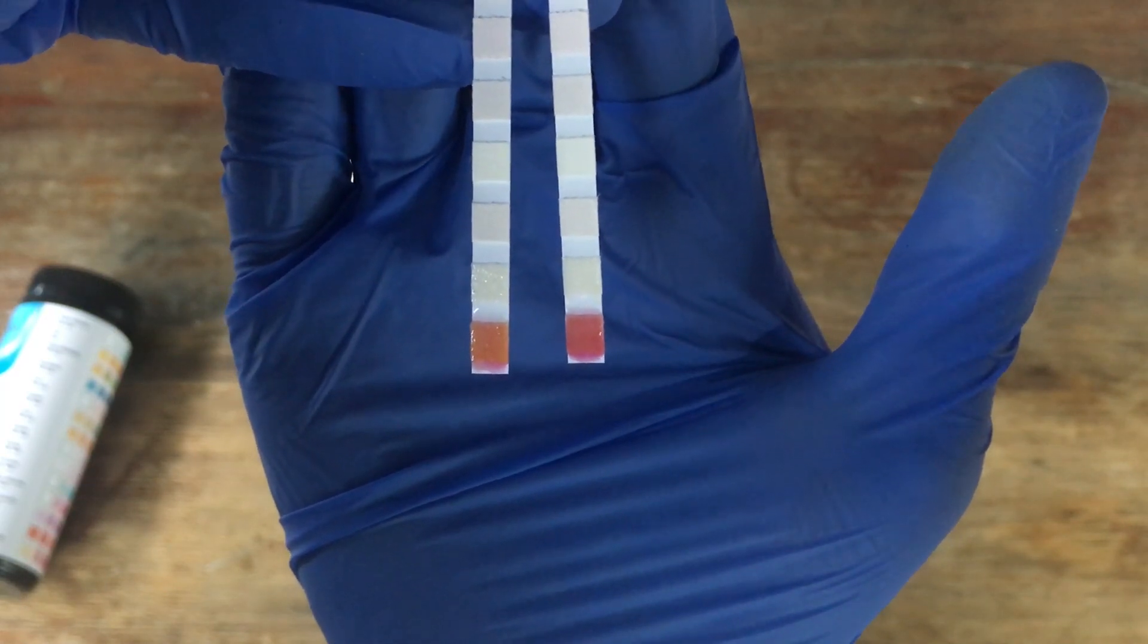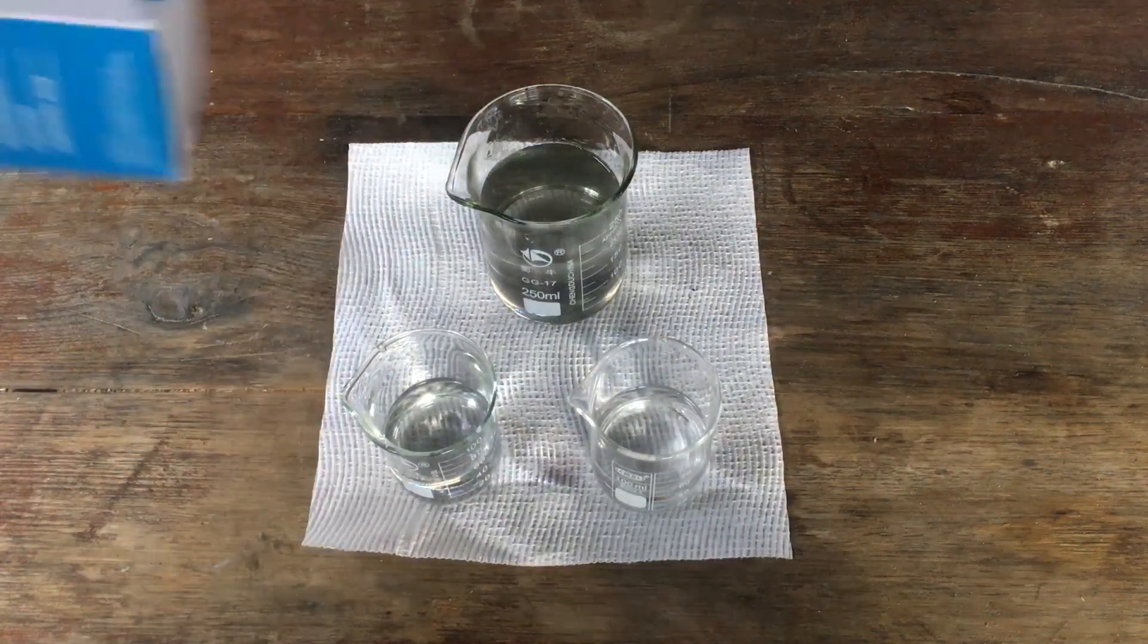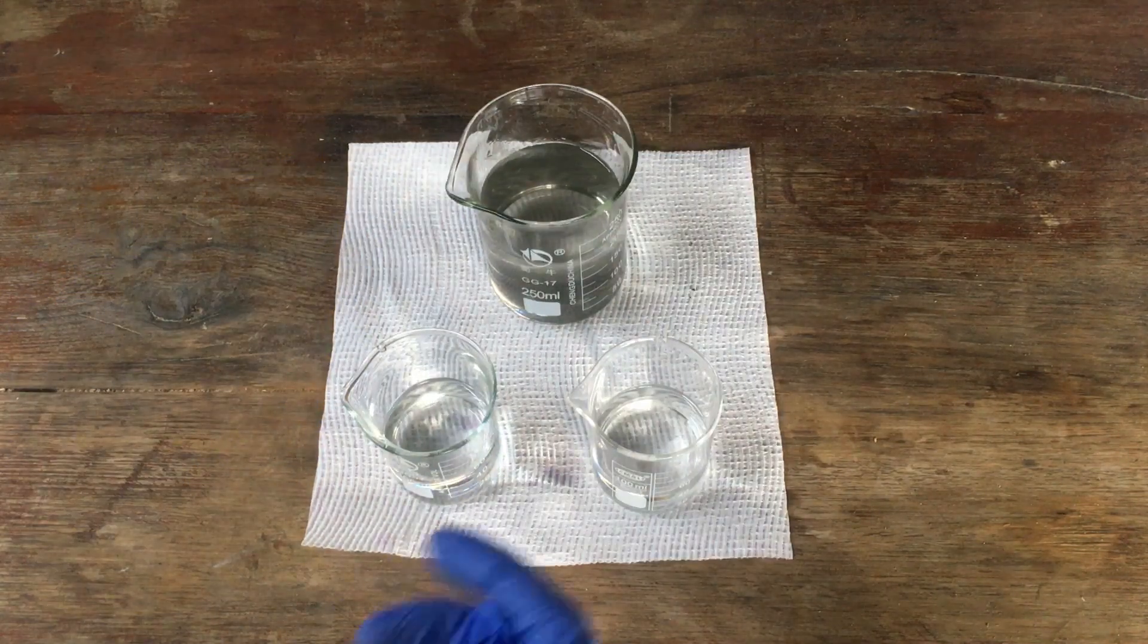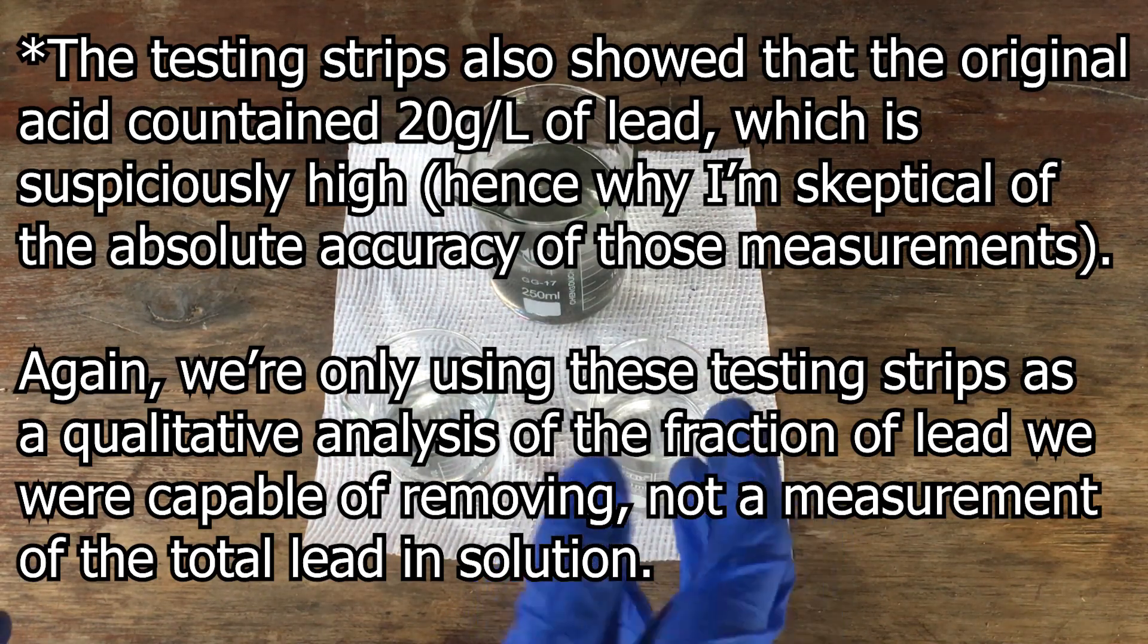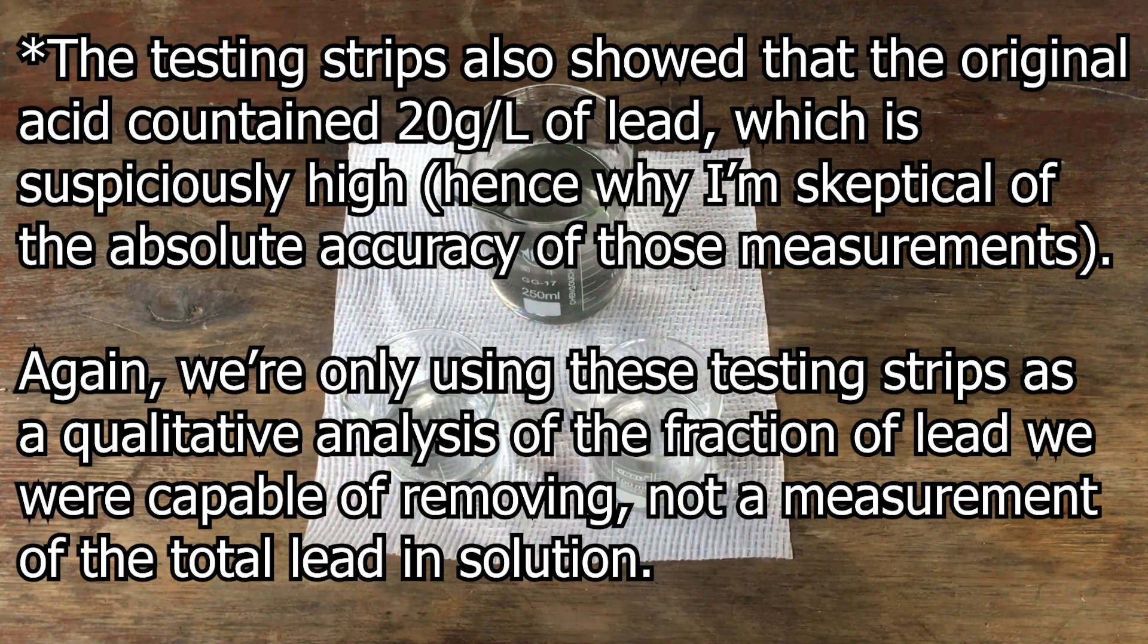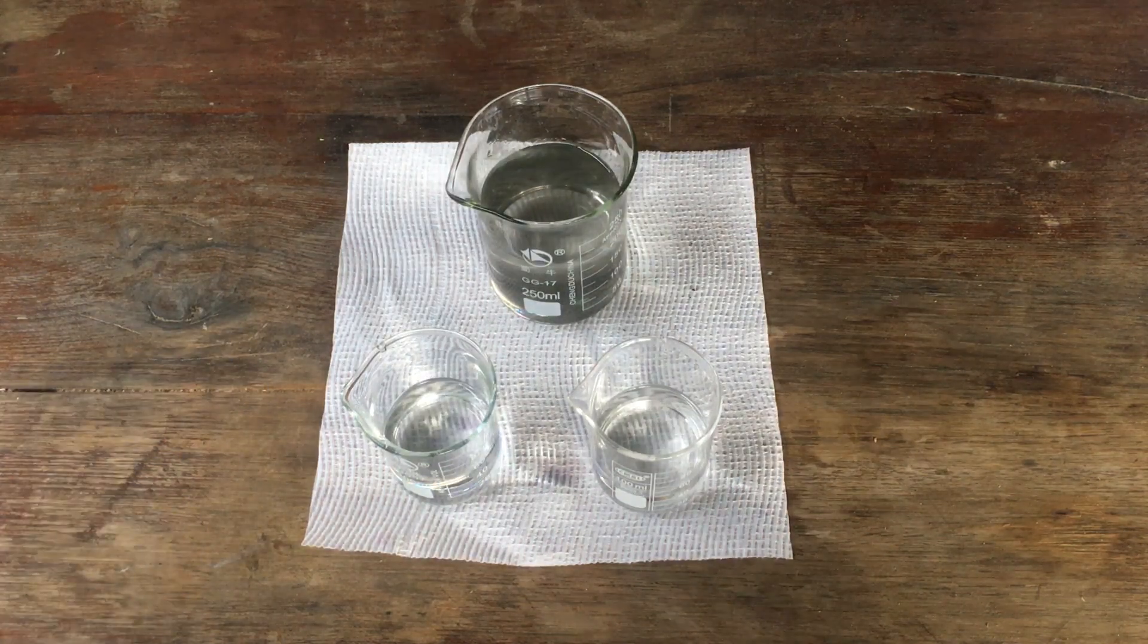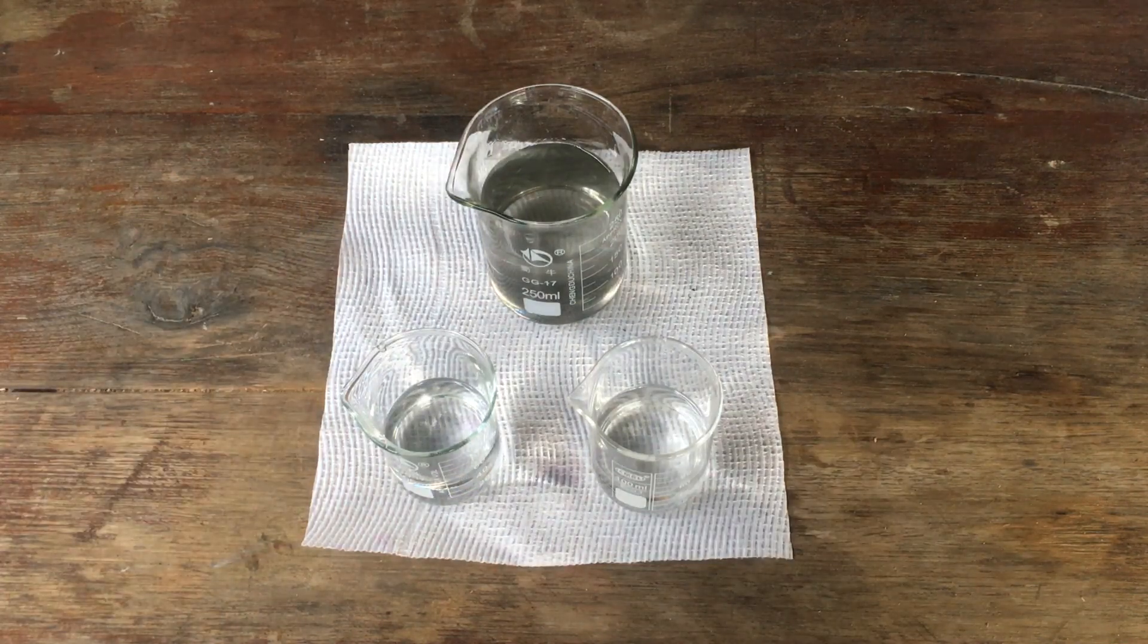Well, there we go. It seems like according to our lead testing strips, by electrolyzing our solution of sulfuric acid, we were able to reduce the lead content by a factor of about a half, which isn't particularly impressive because half the lead contamination really isn't that much of a big improvement. But with longer electrolysis, maybe this might be a viable way of removing the lead. I'm not really sure. I doubt you could remove all of it. As I've said before, it'd just be really, really tricky to remove just that last little bit of lead that's left in solution.